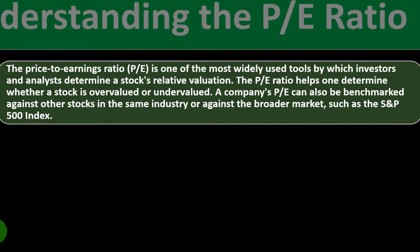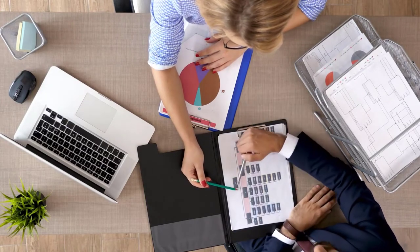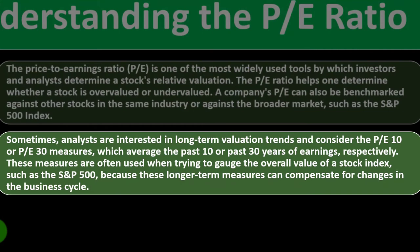The price to earnings ratio is one of the most widely used tools by which investors and analysts determine a stock's relative valuation. The PE ratio helps determine whether a stock is overvalued or undervalued — buy low, sell high. A company's PE can also be benchmarked against other stocks in the same industry or against a broader market such as the S&P 500.